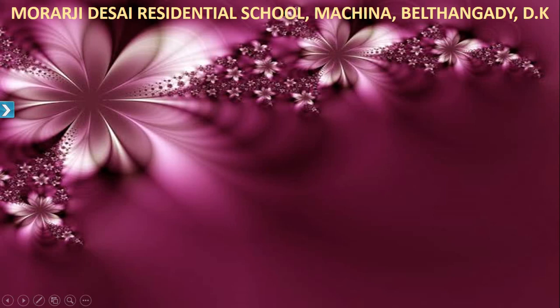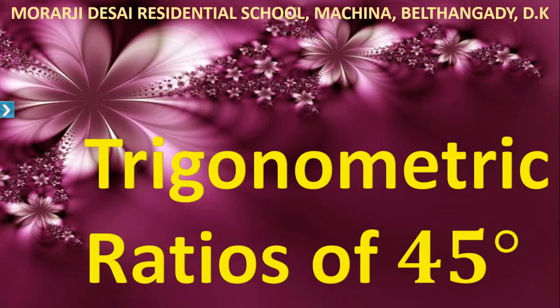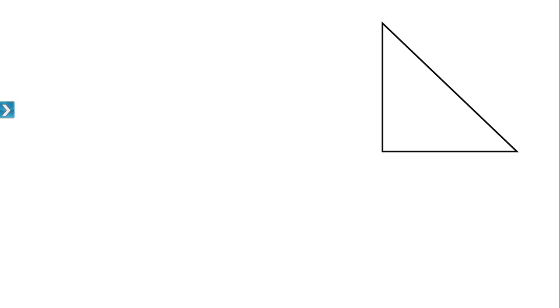Dear students, in this video let us derive trigonometric ratios for angle 45 degrees. Consider a right triangle ABC which is right-angled at B. Now, if angle C is 45 degrees, then what is the value of angle A?